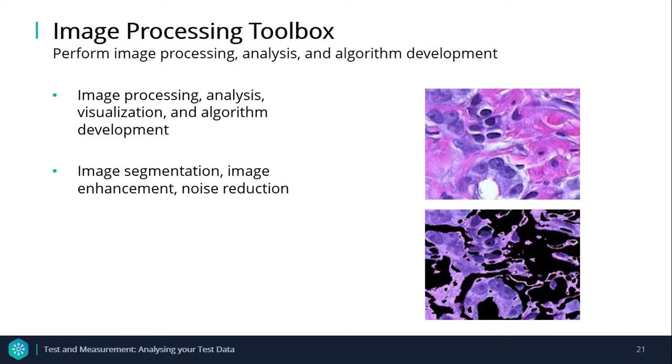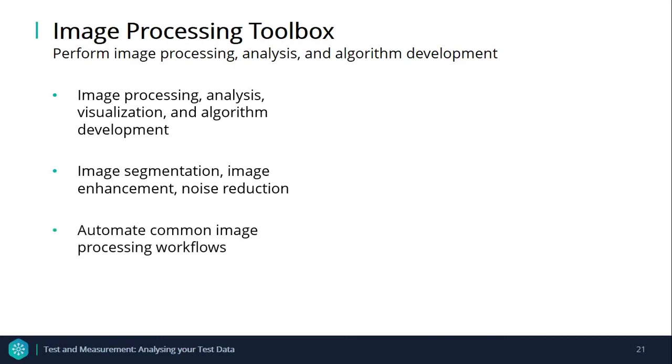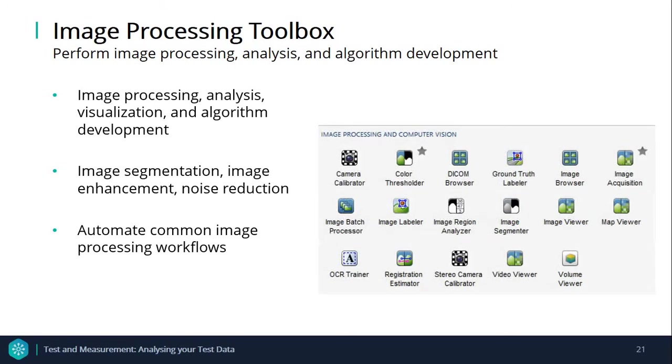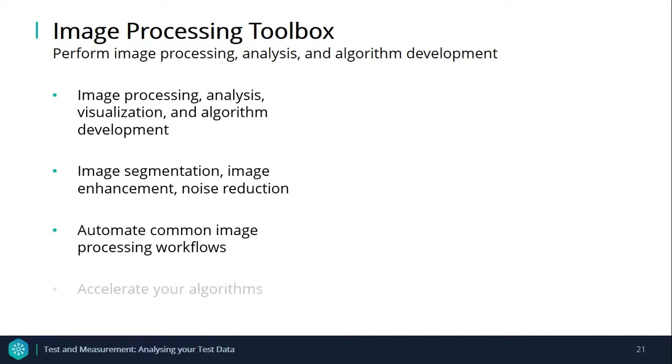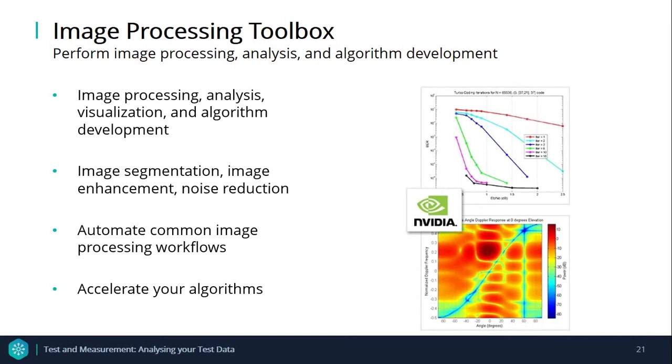They are apps that let you automate common image processing workflows. You can interactively segment image data, compare image registration techniques, and batch process large datasets. Visualization functions and apps let you explore images and videos, adjust contrast, and manipulate regions of interest. You can accelerate your algorithms by running them on multicore processors and GPUs. Many toolbox functions support C and C++ code generation for desktop prototyping and embedded vision system development.